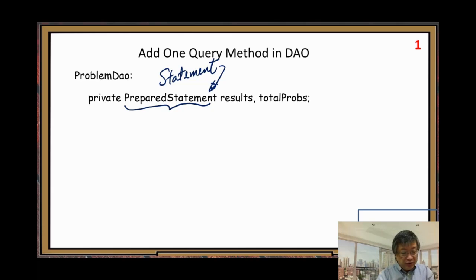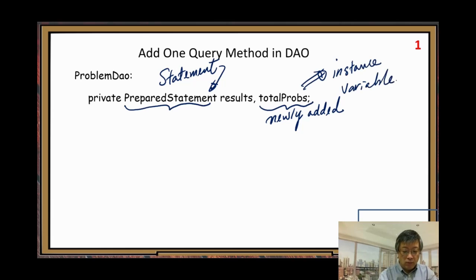Similar to the queries before. The query results, we did in the current code already. So this one is newly added. Total props. So let us add another variable. So this is newly added. After that, then in the constructor, so this is instance variable part. So you know where it is.